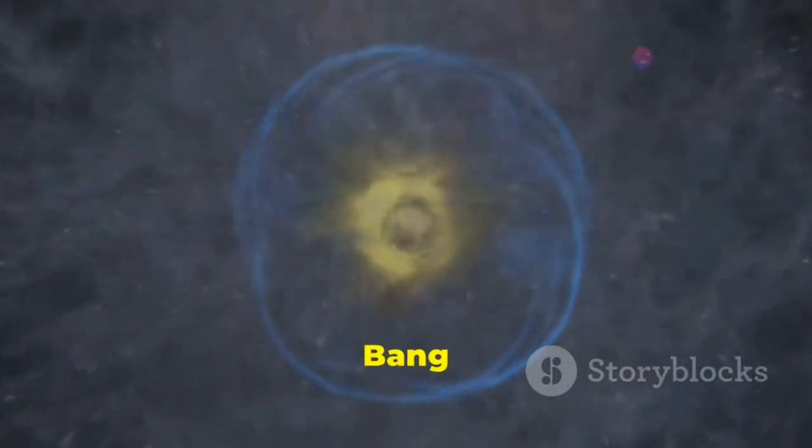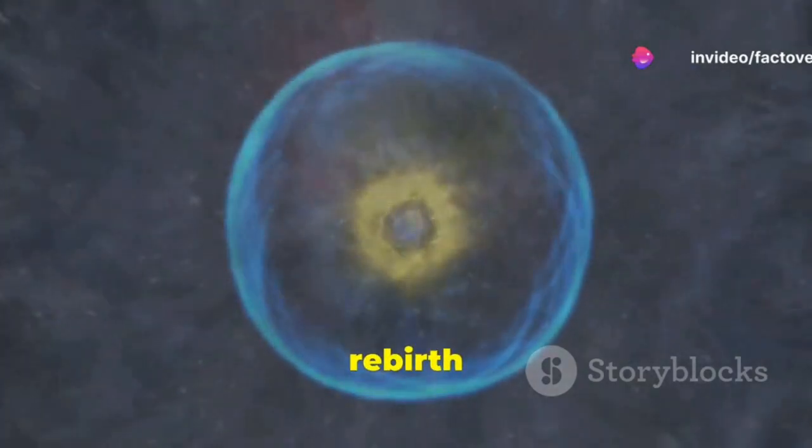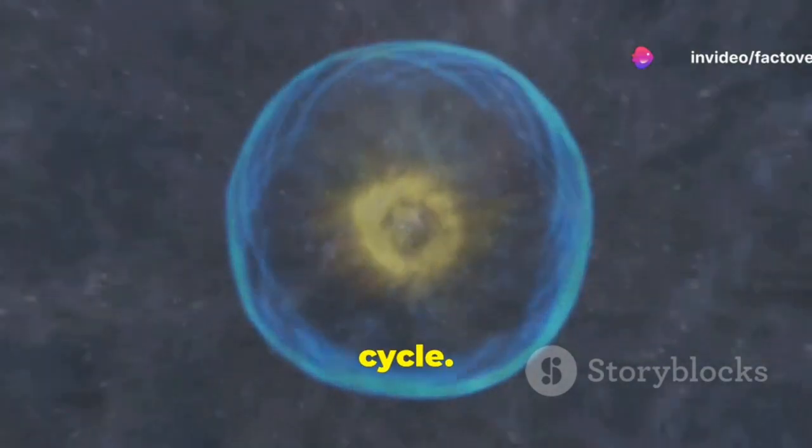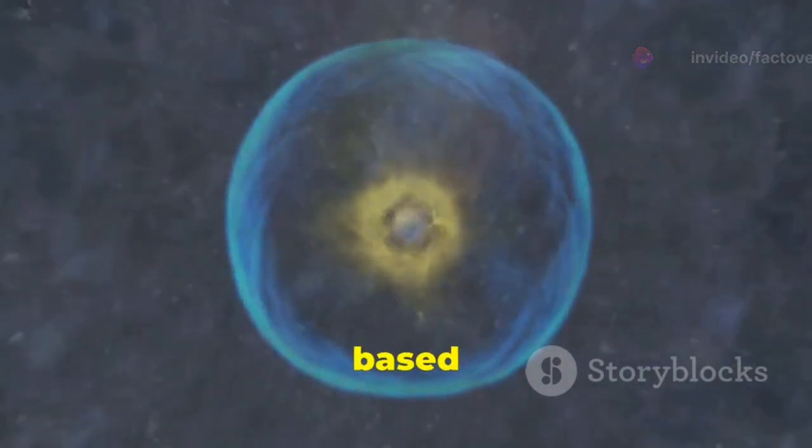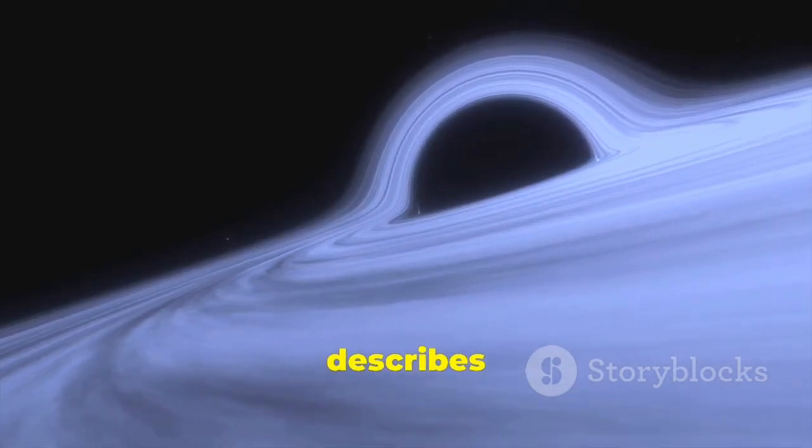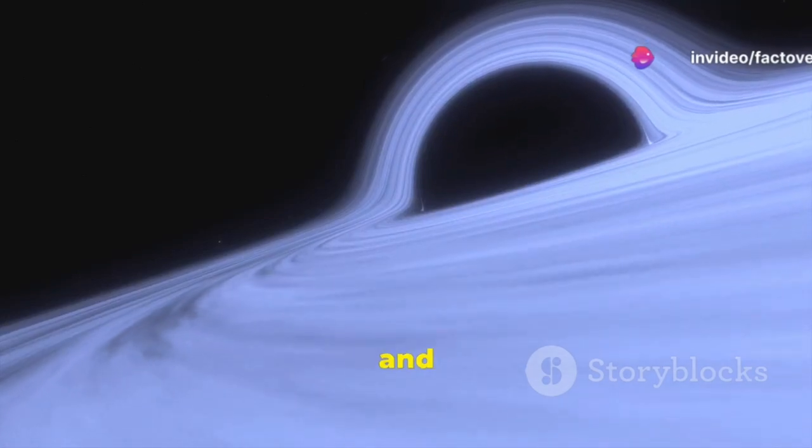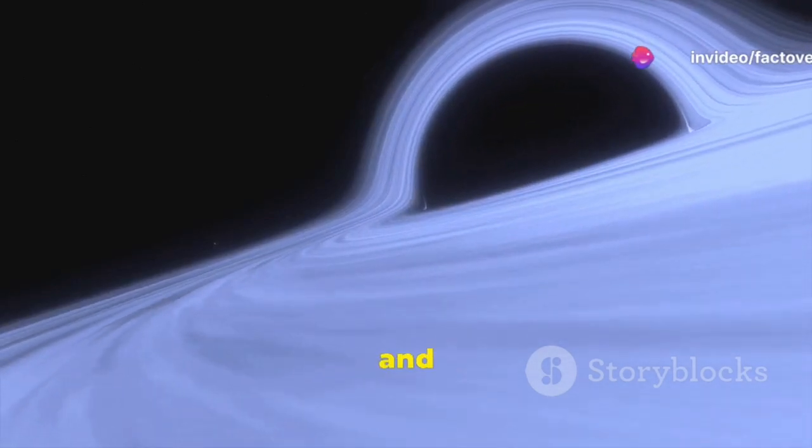In this model, the Big Bang is not the beginning, but rather a transition point, a moment of rebirth within an eternal cycle. These cyclical models are often based on Einstein's theory of general relativity, which describes the universe as a dynamic entity, its fabric warped and molded by the presence of matter and energy.